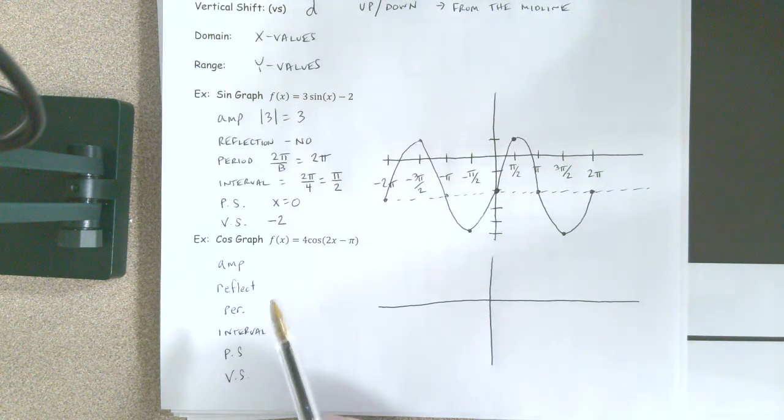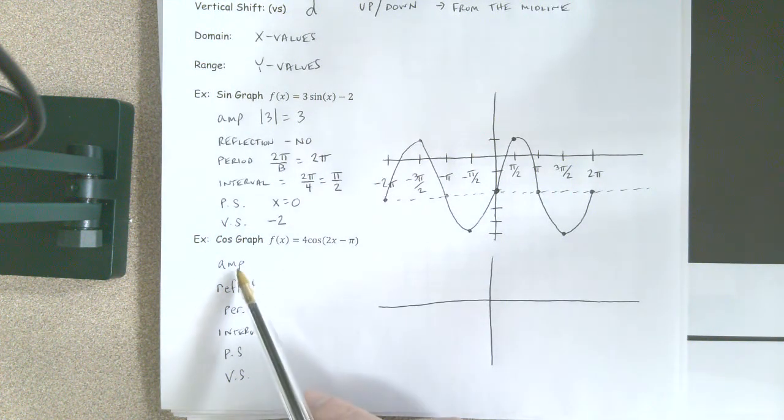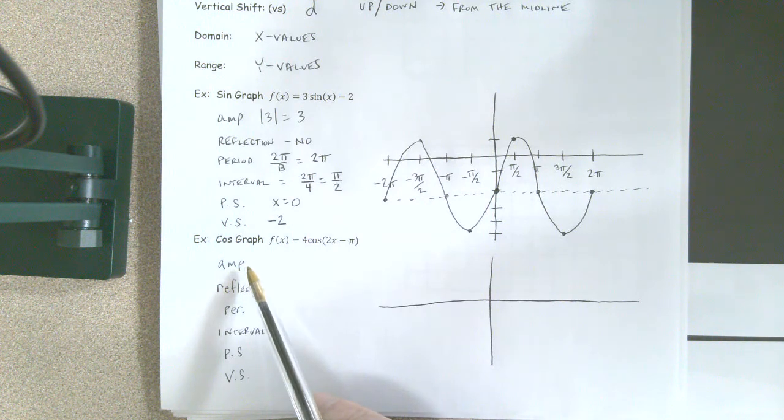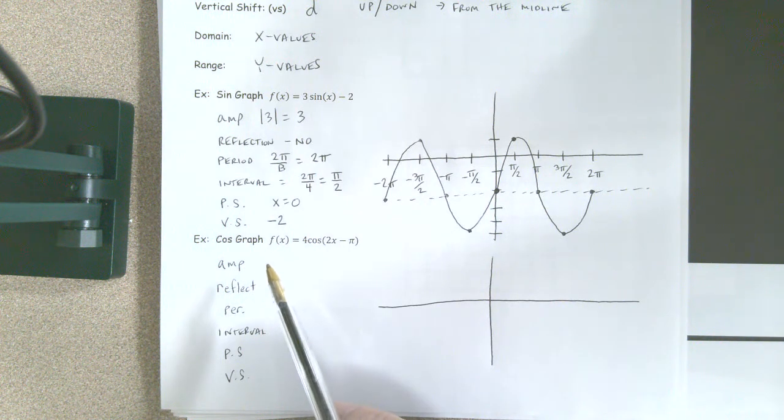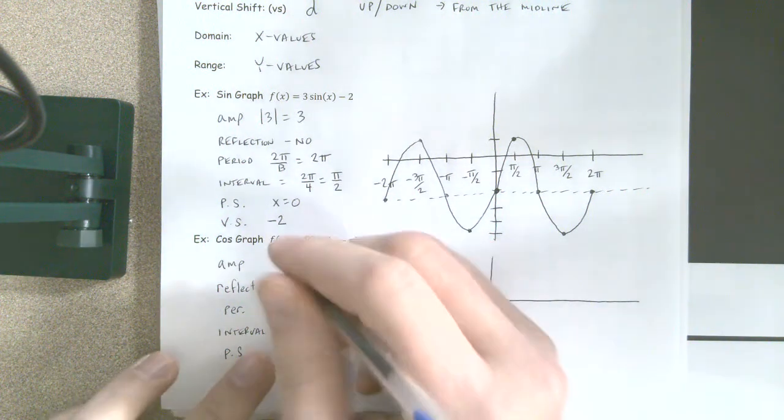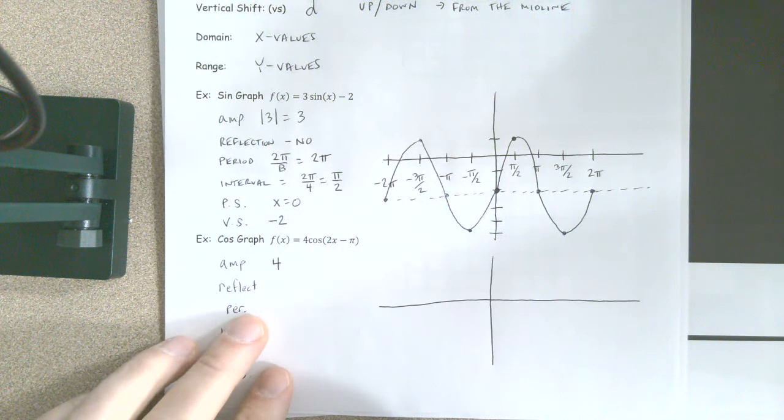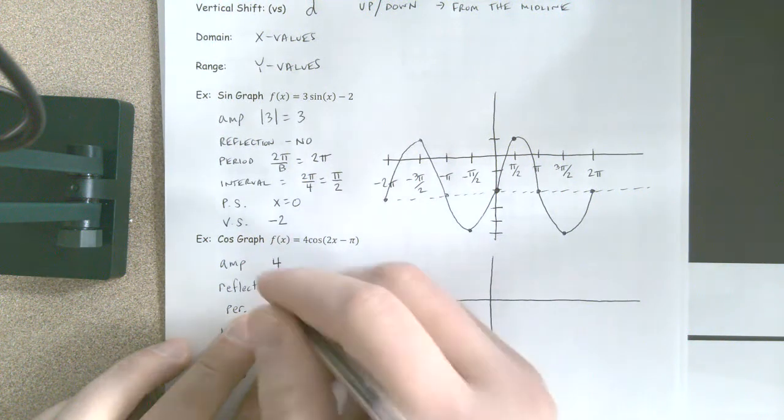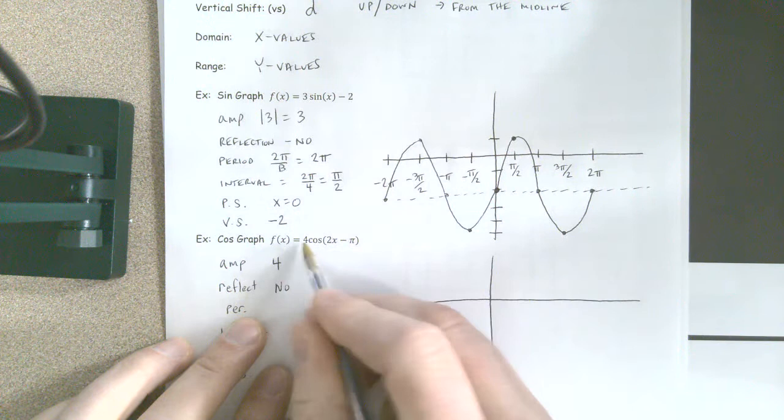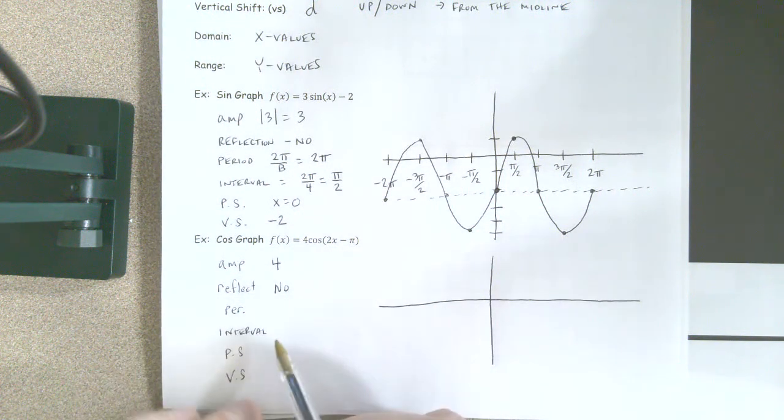Okay, let's go ahead and go through these. How about the amplitude? Can somebody tell us what you got for the amplitude? Avery? Okay, so our amplitude is 4. Is there a reflection? No reflection, because the A value is positive.